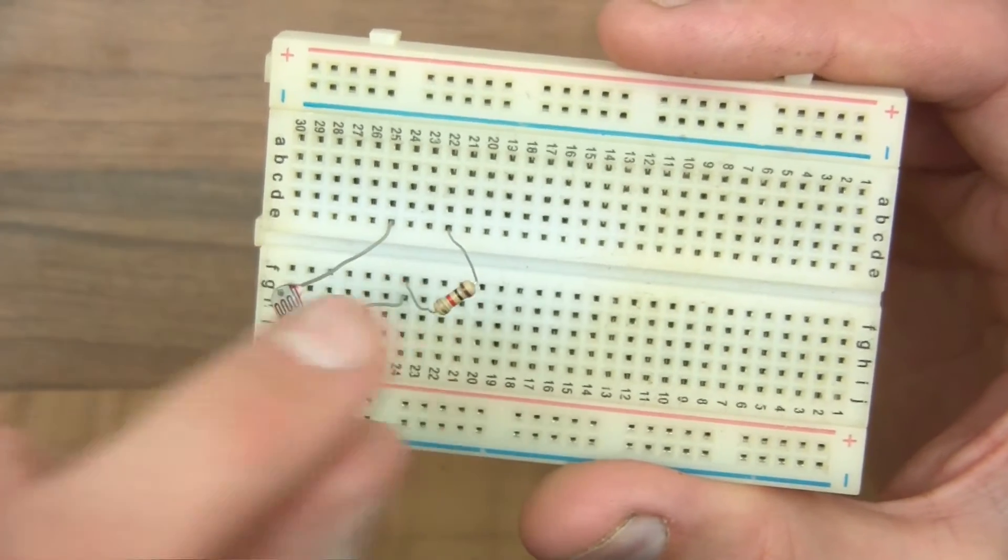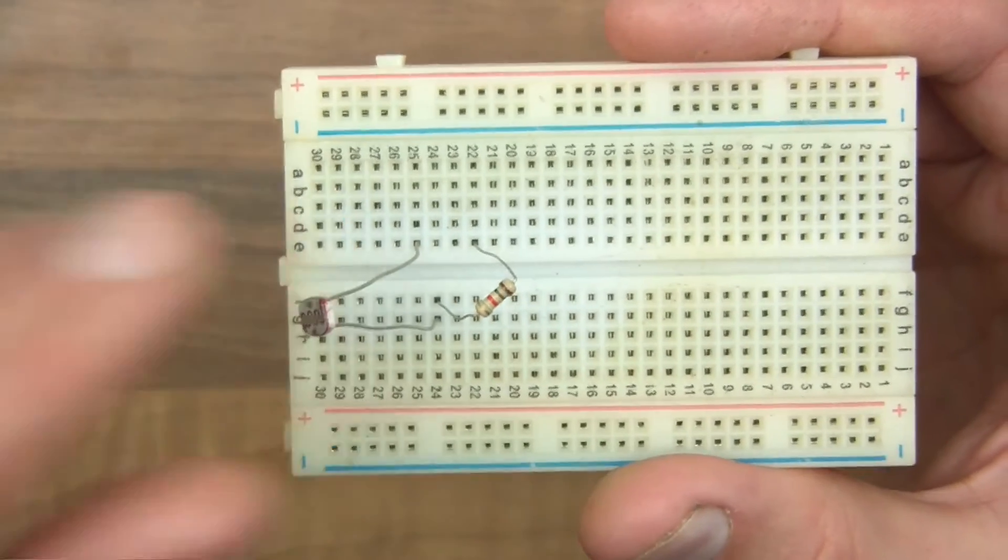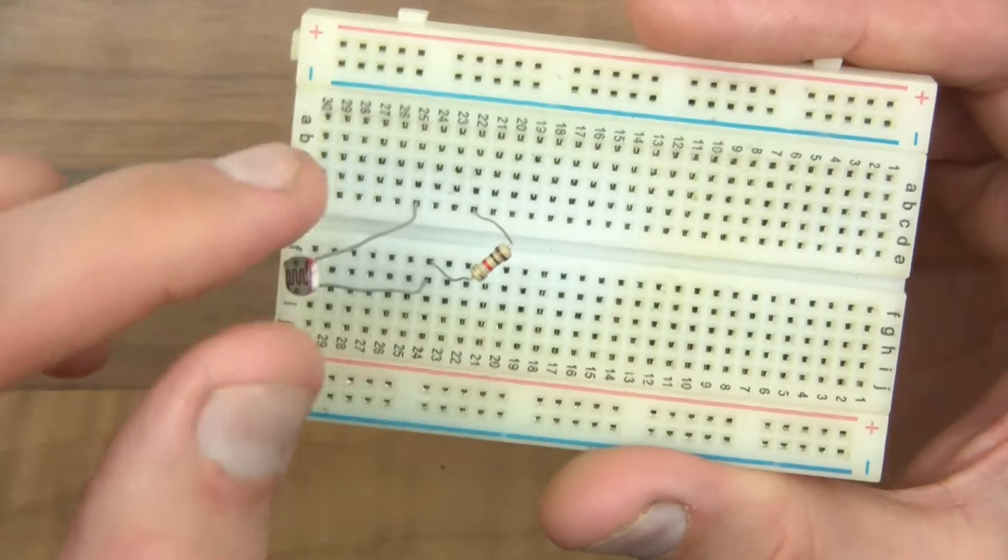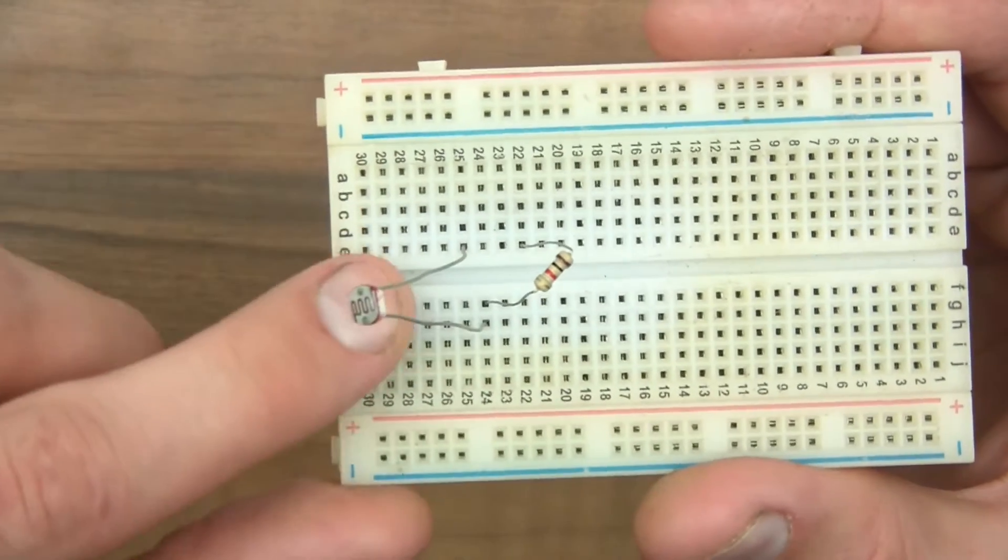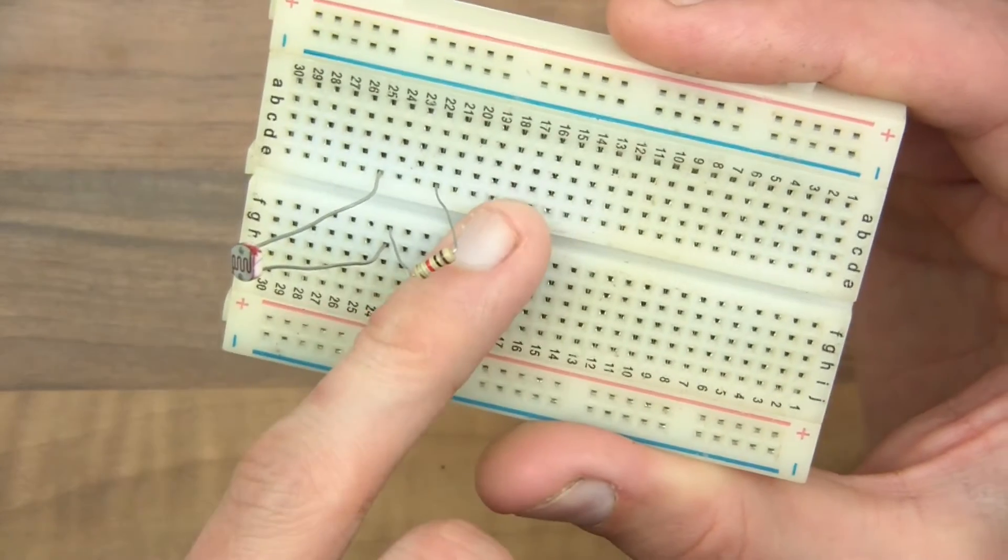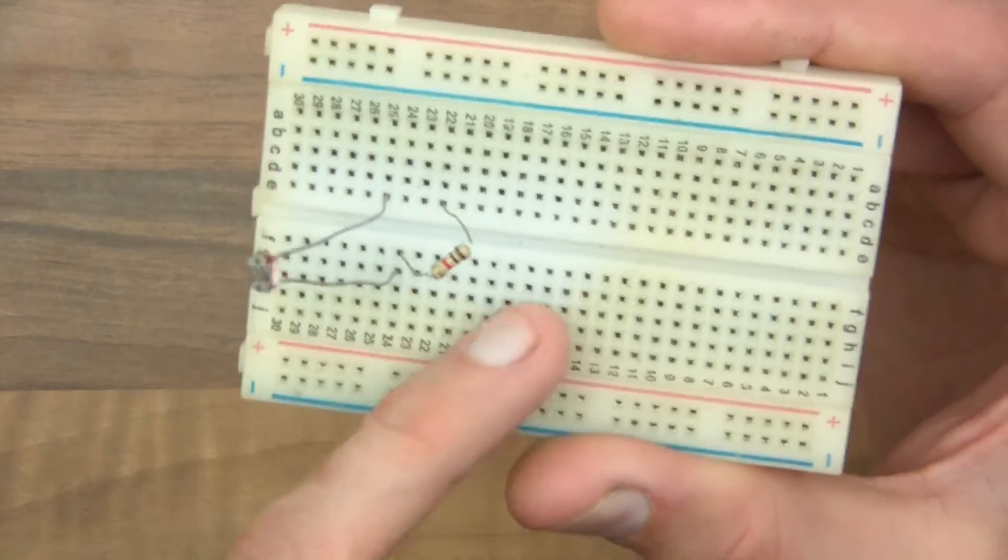So if this was 10K and this is 1K, you'd potentially have 10 times as much drop here than here. And therefore, the 5 volts, a considerable amount would be dropped across this resistor, and when you measure this to this, then the voltage here would be very small in comparison to this. And that's how it works.